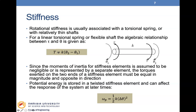The stiffness element for rotational systems is the torsional spring. Rotational stiffness is usually associated with a torsional spring or a relatively thin shaft — when the shaft is very thin and you apply a torque on the two ends, it has a springing effect. For a linear torsional spring or flexible shaft, the torque T equals the spring constant multiplied by the change in angular displacements.